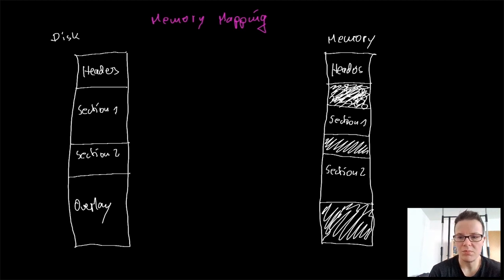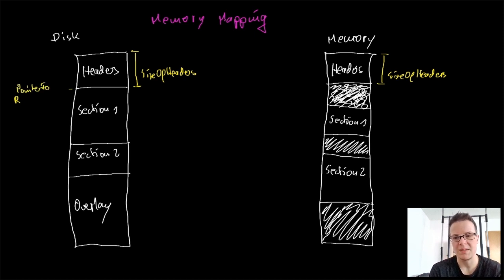The whole portion of memory that is allocated is in a value in the optional header that is called size of image. The size of headers, that's also in the optional header, will tell how much of the headers has to be mapped. So it starts at the offset zero on disk, and in memory it will be starting at the base address. The base address is the first byte in memory, the address of the first byte in memory, and that's not the same as on disk.